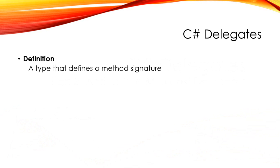As a reminder, a delegate is a type that defines a method signature. So rather than having a type with data and behavior like we're used to with classes, a delegate is just a method signature — the parameters that it requires and the return type that it returns.